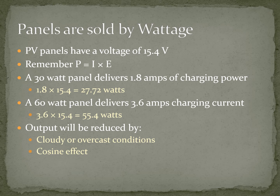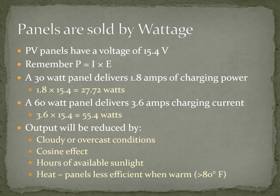Output is also reduced by fewer hours of available sunlight — in winter we have fewer hours than in summer. However, heat in summer also makes the panels less efficient: when they get above 80 degrees Fahrenheit, they do lose some efficiency as well.